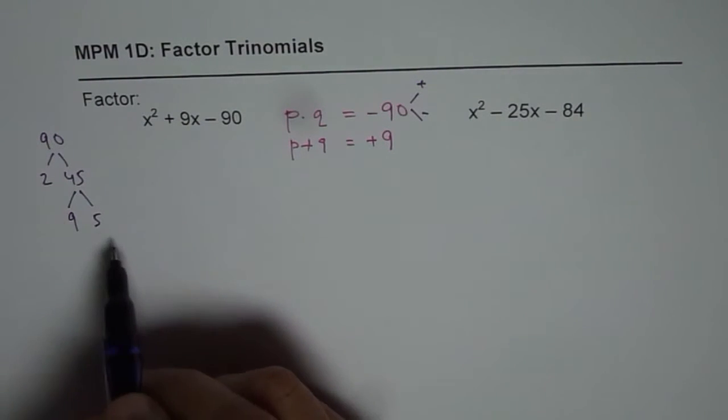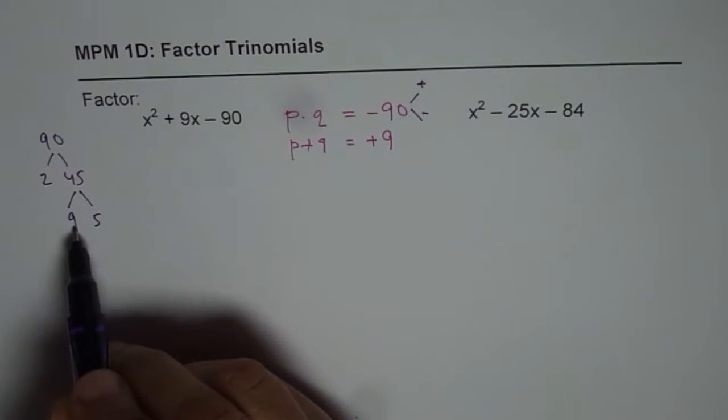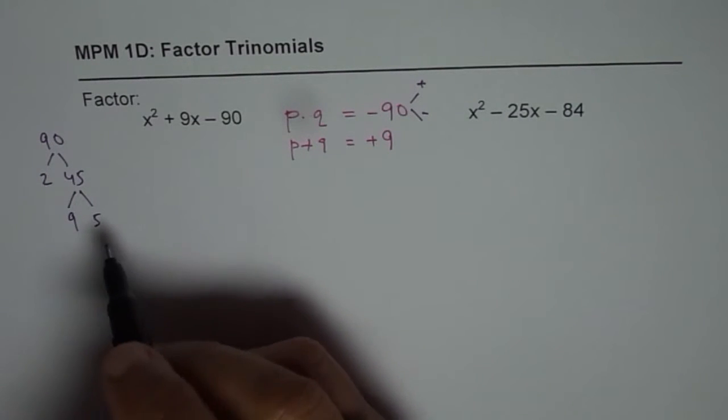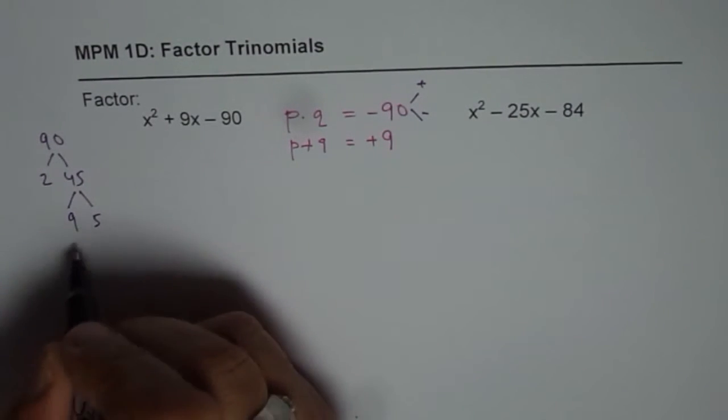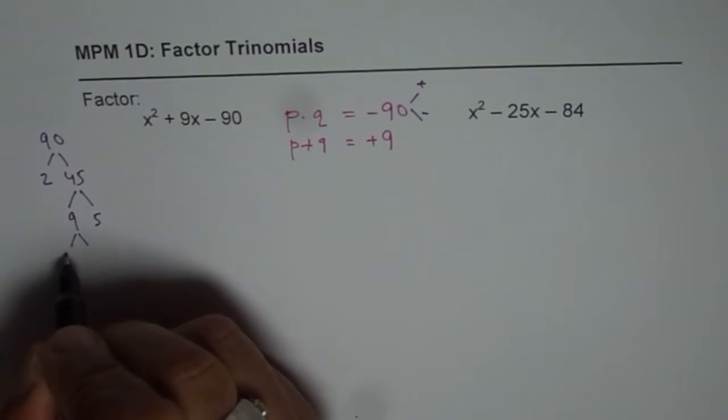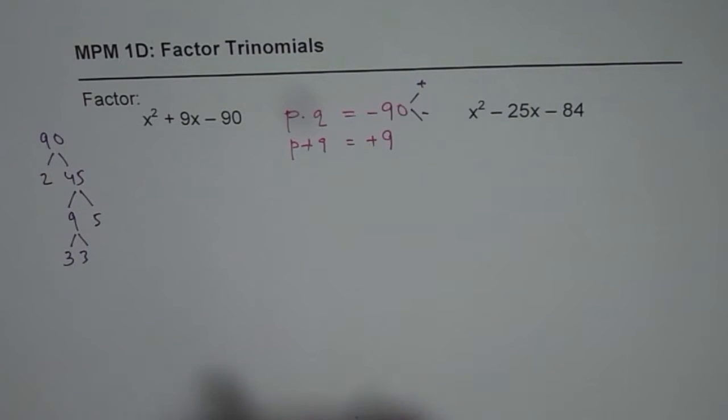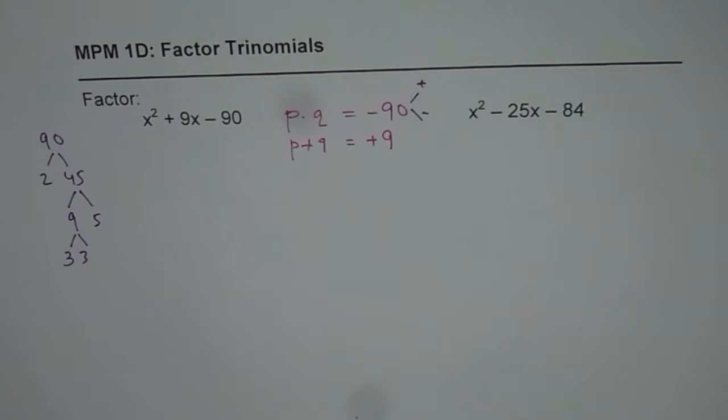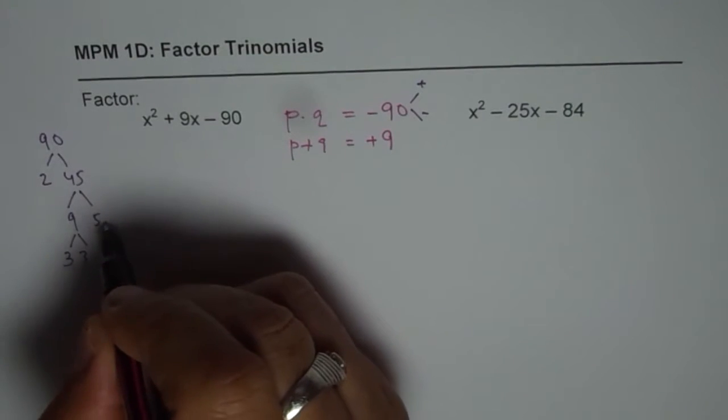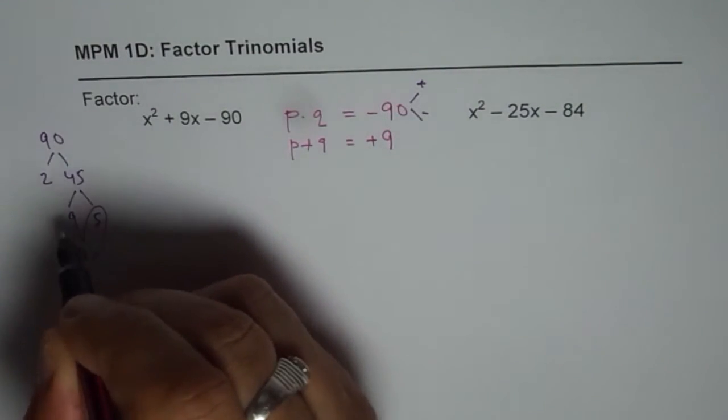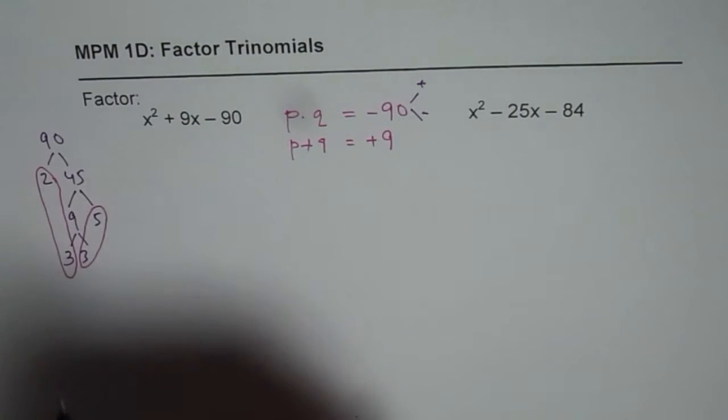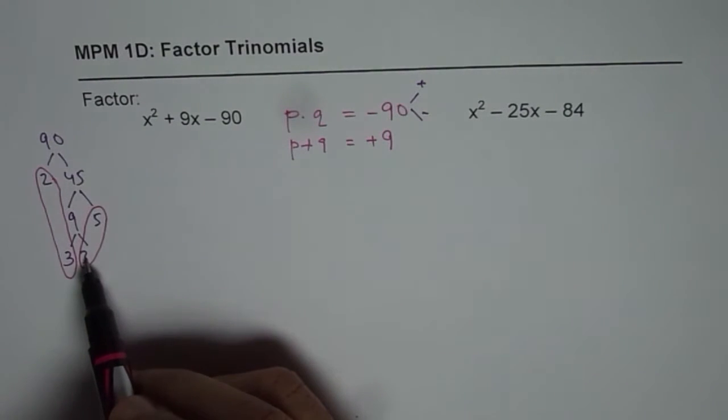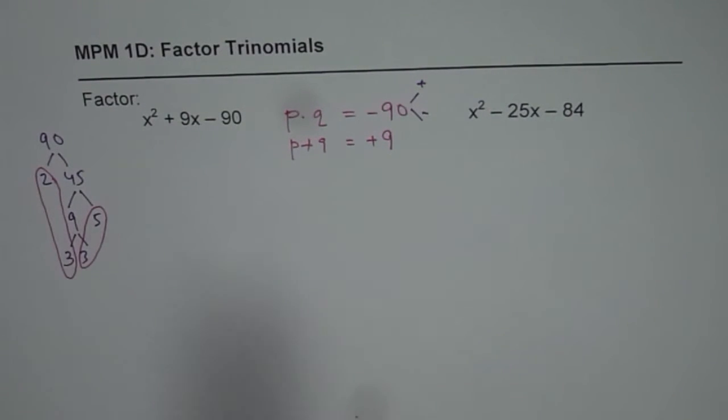Now that gives us combination of 10 and 9. Well 10 and 9 doesn't really work for us. So what we can do is we can further decompose 9 and kind of write prime factors 3 times 3. Now we get a set of numbers to work with. If you observe if you use these set of numbers then 5 times 3 is 15. 3 times 2 is 6.